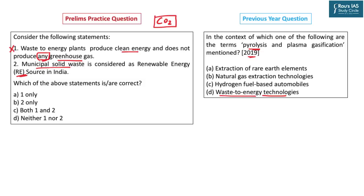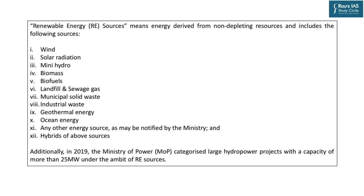Concerning Statement 2, at present there is no specific legislation that governs renewable energy in India. The principal legislation governing the electricity sector is the Electricity Act 2003, and renewable energy falls under it. The Electricity Act 2003 itself does not define renewable energy, but a 2020 regulation under it defines renewable energy as electricity generated from renewable energy sources. The list includes wind energy, solar energy, mini-hydro, biomass, biofuels, landfill and sewage gas, municipal solid waste, industrial waste, geothermal energy, ocean energy, hybrids of these, or any other source notified by the ministry.